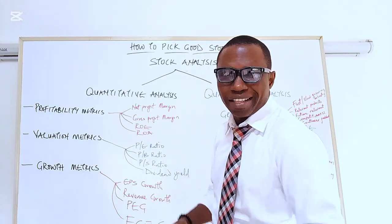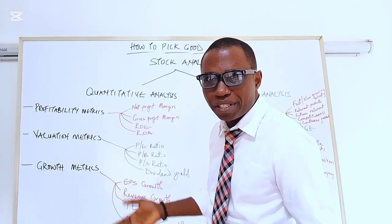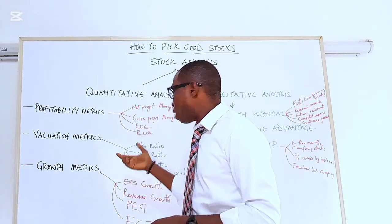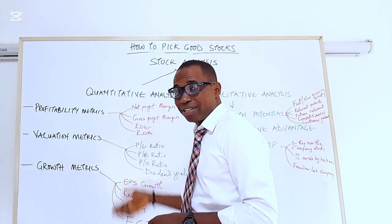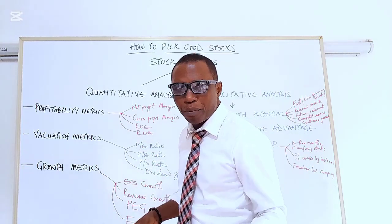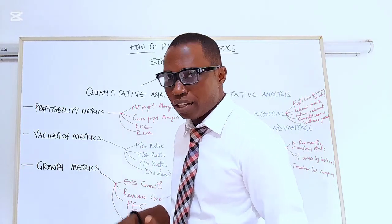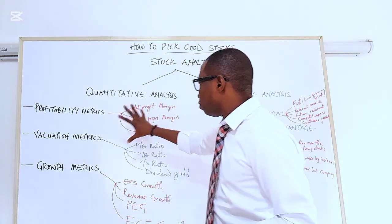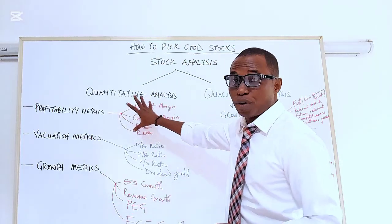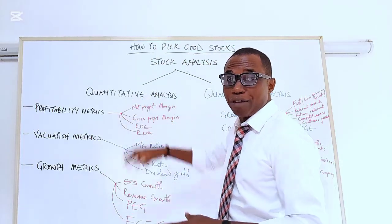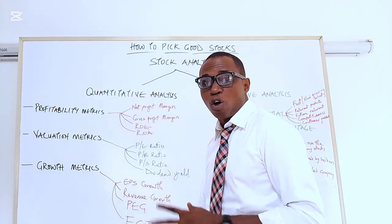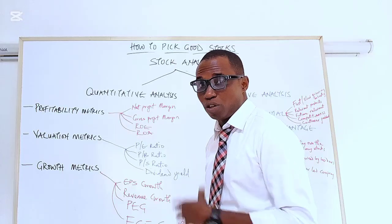For return on assets, anything above 15% to 20% is generally considered okay. After you are satisfied with the profitability metrics, you then move to what we call valuation metrics.